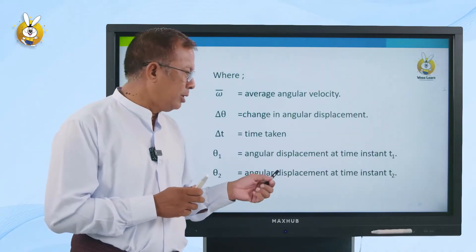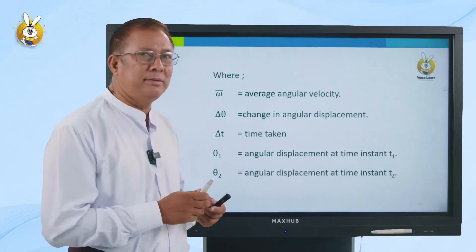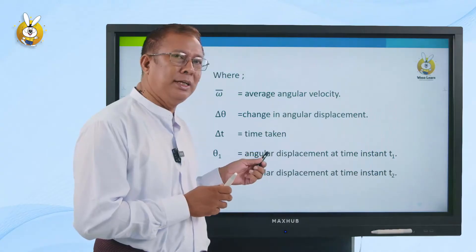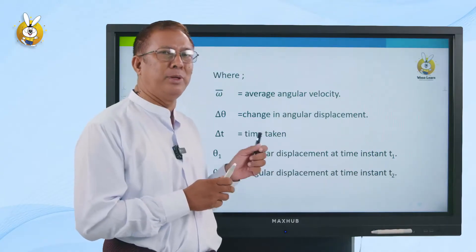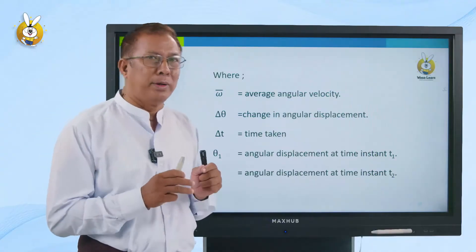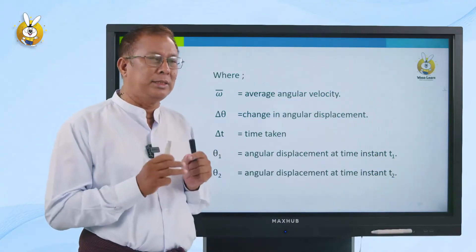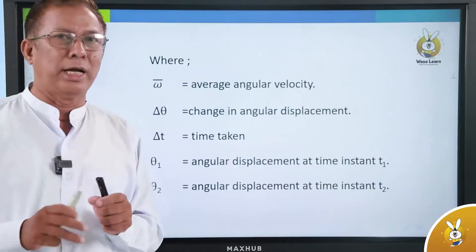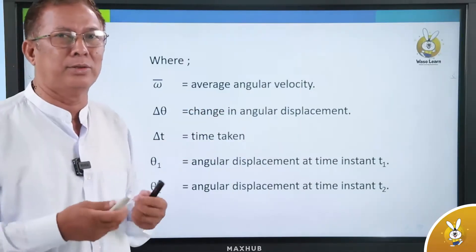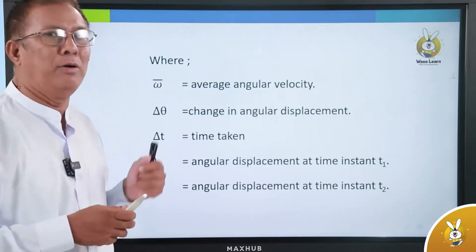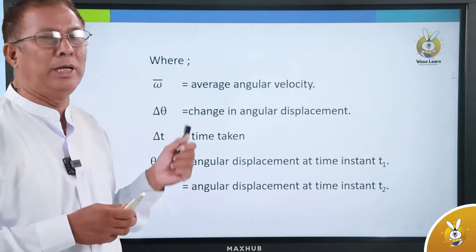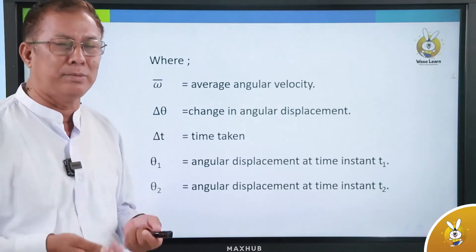The angular displacement is fixed at instant T2. So T2 gives us the angular displacement. The equation for every angular velocity is the same — every angular velocity equals the angular displacement over time.